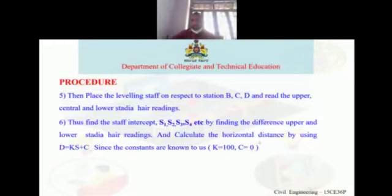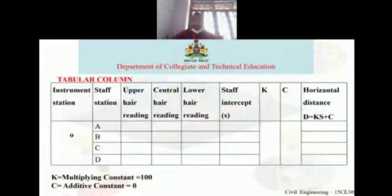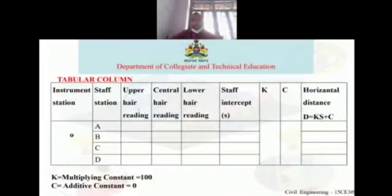Once done with the procedural part, enter all values in the tabular column. The tabular column includes: instrument station, staff station, upper hair reading, central hair reading, lower hair reading, staff intercept S, multiplying constant k, additive constant c, and horizontal distance D = kS + c.